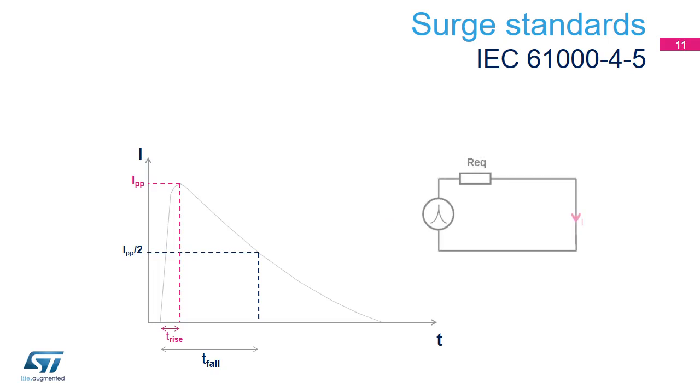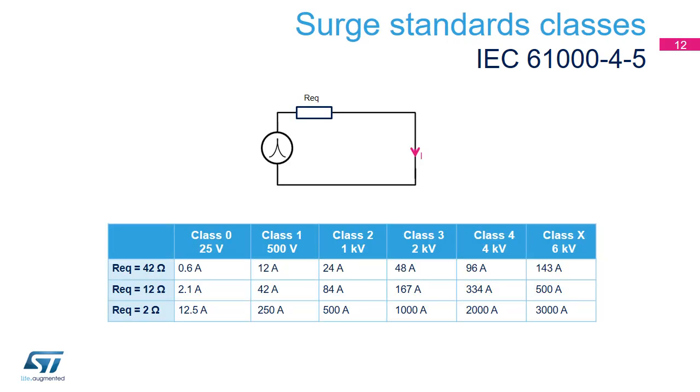For short circuits, the surge generated must reach its current peak in 8 microseconds and fall to half its peak value in 20 microseconds. The peak current depends on the resistance placed between the generator and the circuit. A table must therefore be used to account for this. The peak current is defined by a resistance and a peak voltage.